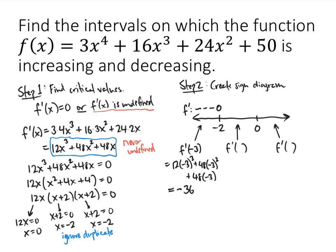At negative 2, f prime is 0. Between negative 2 and 0, I pick x equals negative 1. Plugging in: 12 times negative 1 cubed plus 48 times negative 1 squared plus 48 times negative 1 gives negative 12. So f prime is negative from negative 2 all the way up to 0. This shows that at the critical value x equals negative 2, f prime could have changed sign from negative to positive, but it didn't — it stayed negative.